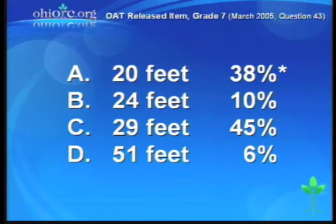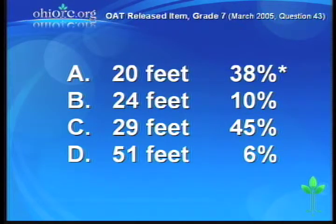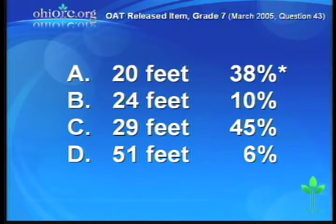Choice C is the most interesting distractor: 29 feet was chosen by 45% of our students. What they most likely did is looked at the difference between Lance's shadow and Lance's height — 8 minus 5 equals 3 — and then subtracted that 3 from the tree's shadow of 32. This shows they applied an additive method of thinking instead of a multiplicative idea. Choice D was chosen by only 6% — most likely because they flipped the ratios when setting up the proportion.